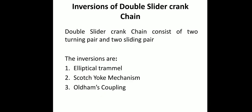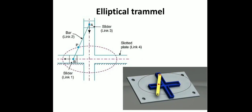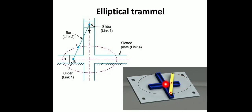The elliptical trammel is used as an example. It has two sliders and a fixed frame. The remaining link traces an ellipse. This is the elliptical trammel — used in basic engineering and machinery applications.